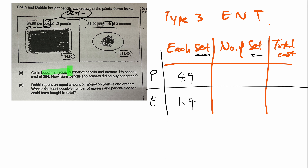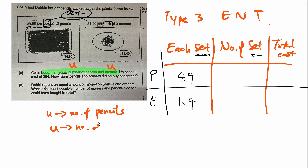The question says they bought an equal number of pencils and erasers. Meaning you have U pencils and you have U erasers. The U here is the number of pencils and the U here is the number of erasers. Why both U and U? Because they say 'equal number' — equal number means one is U and the other must also be U.